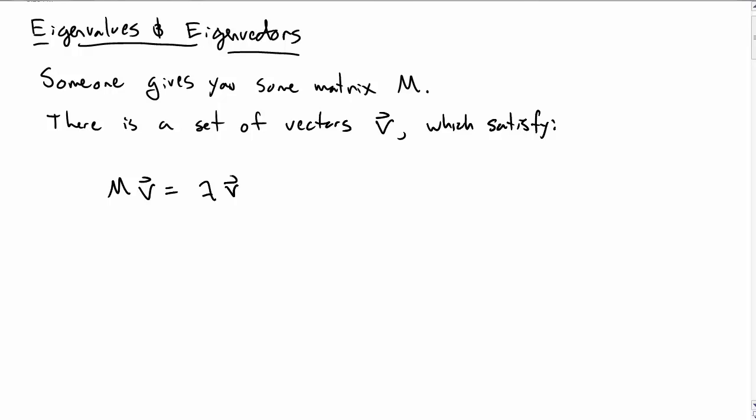The special set of vectors V satisfy a particularly nice relationship. If you take M times V you get lambda times V back. We call V the eigenvector, and lambda we call the eigenvalue. You multiply the matrix times the vector and you get a number times the vector back again. We call this the eigenvalue equation.